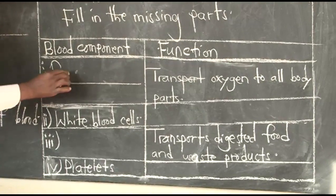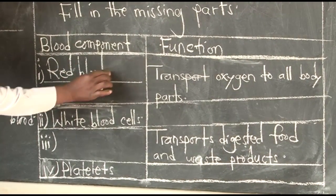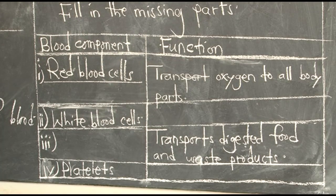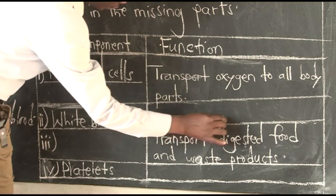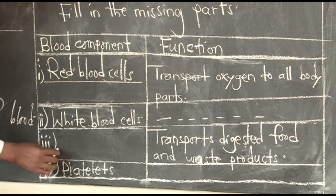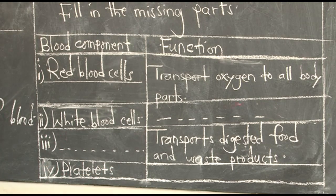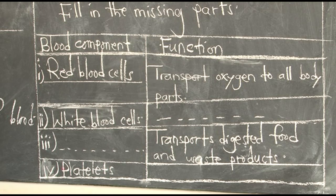For part two in the table, we are given white blood cells as the blood component, and we are asked the function. So what is the function of white blood cells in the body? You can answer this one. Then roman number three, we are given a gap to fill: dash transports digestible food and waste products. Which blood component does the work of transporting? This is also left for you. Then the last part — we are given the platelets. What is the function of platelets in the body? Fill in the table.